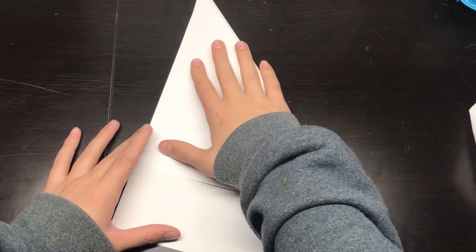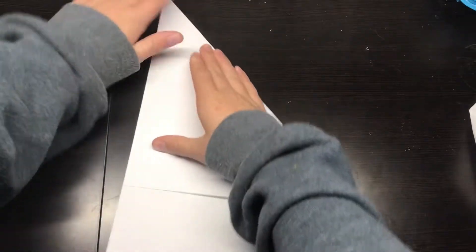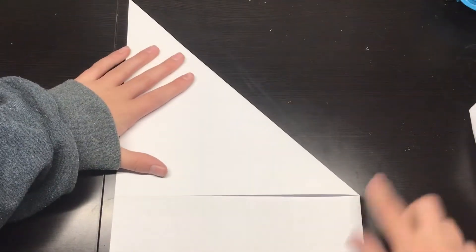Then you need a square piece of paper. So you fold this corner down like this, and then you trim that for a square piece of paper.